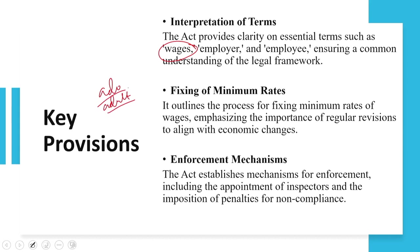When you look into the terminology of appropriate government, it means in relation to any scheduled employment carried on by or under the authority of the central government — such as a railway administration, mine, oil field, major port, or any corporation established by a central act. In relation to any other scheduled employment, the state government comes into picture. The act also defines child as a person who has not completed their fourteenth year of age, and categorically defines all functional words.